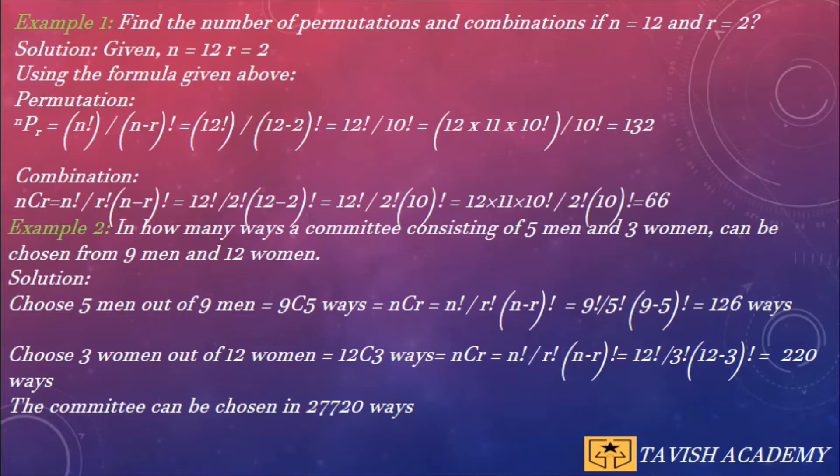of permutation is nPr = n! / (n-r)!. Therefore, 12! / (12-2)! which is equal to 12! / 10!. So our final answer is 132. Now combination is